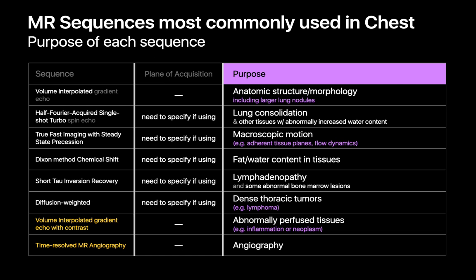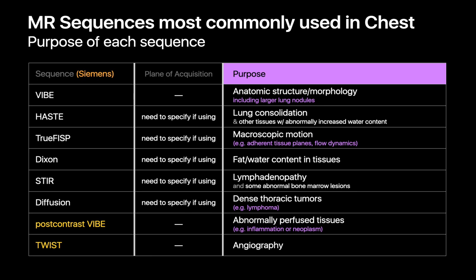You've probably noticed I've been using the generic names of all of these imaging sequences, and they're quite a mouthful. That's why in real life we'll usually use the vendor-specific branded acronyms. Since we're a Siemens shop, I refer to the first six sequences as the VIBE, HASTE, True FISP, Dixon, STIR, and diffusion images. And I refer to the contrast enhanced sequences as the post-contrast VIBE and TWIST images.